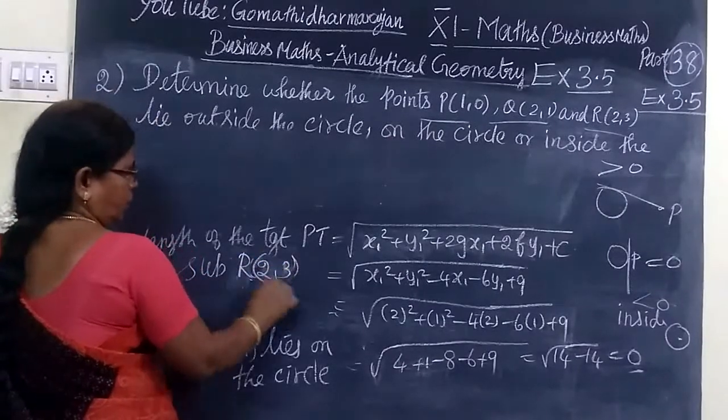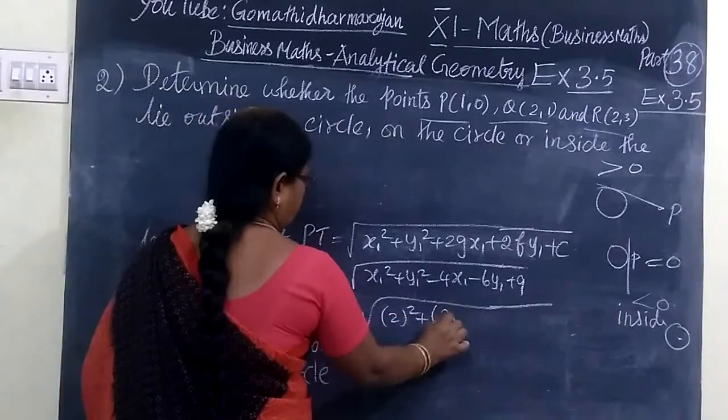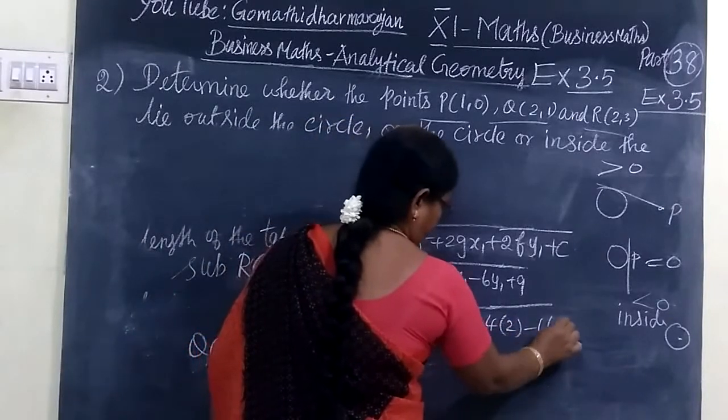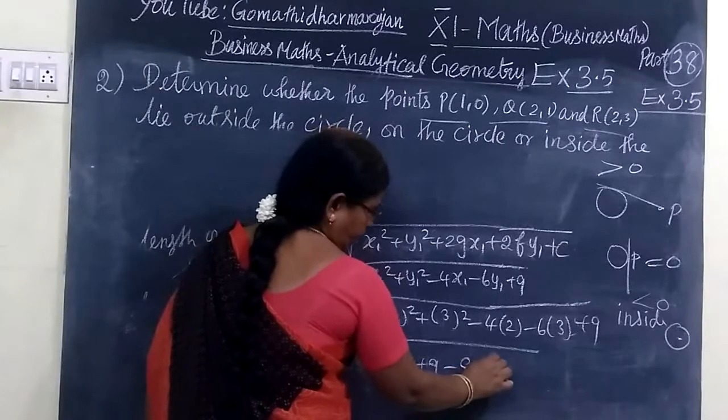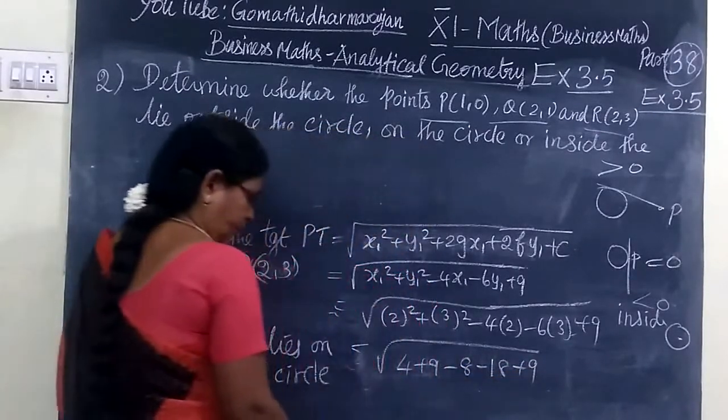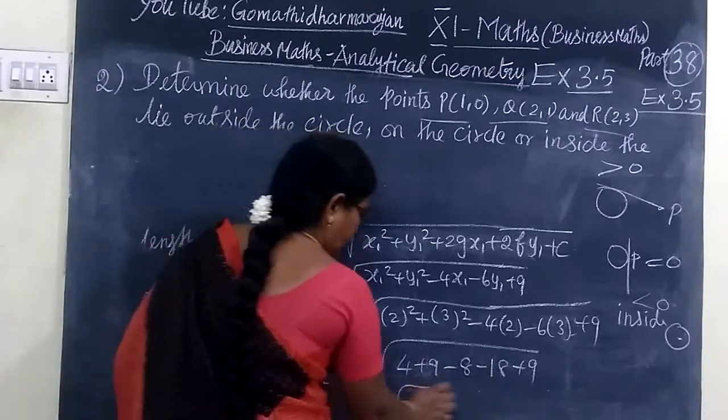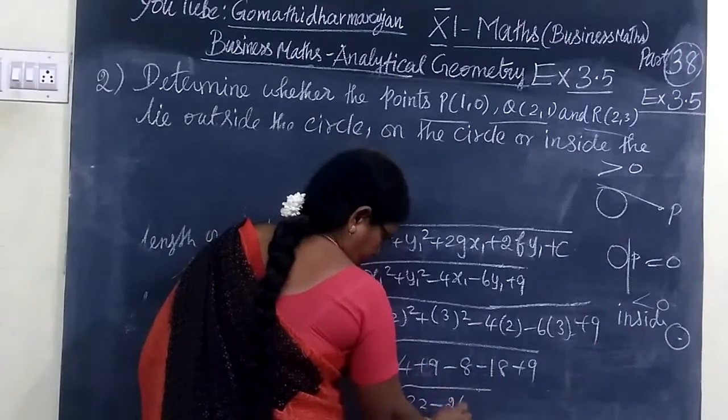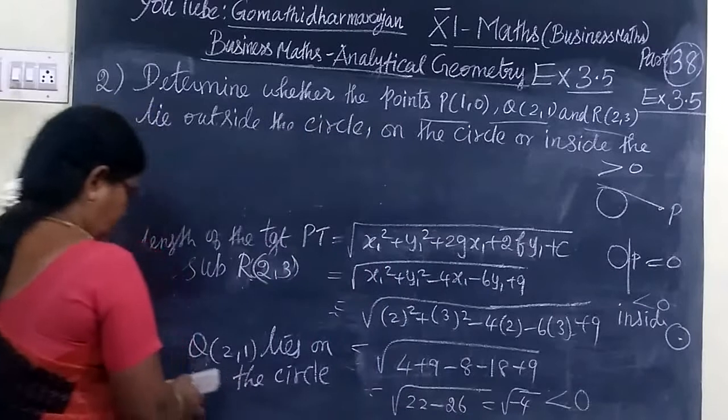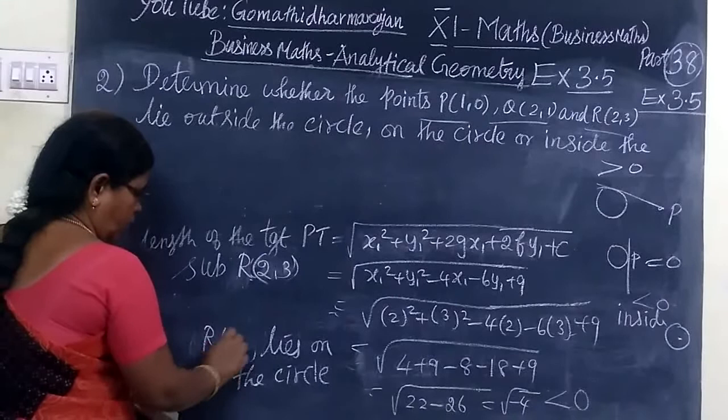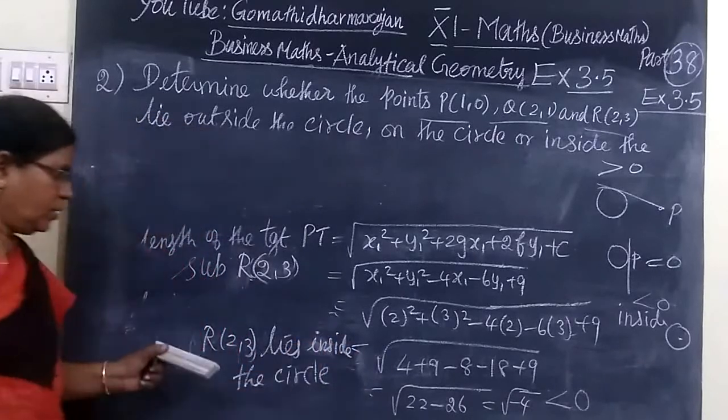R is 2 comma 3. In the same equation we substitute: 2 square then 3 square minus 4 times 2 minus 6 times 3 plus 9. This equals 4 plus 9 minus 8 minus 18 plus 9. So 22 minus 26 gives root of minus 4. This is less than 0. Therefore, R(2,3) lies inside the circle.